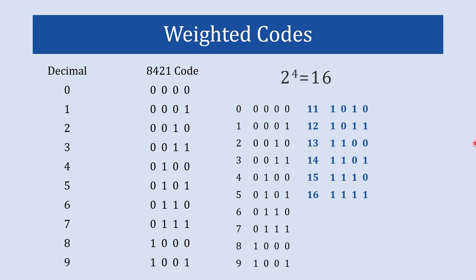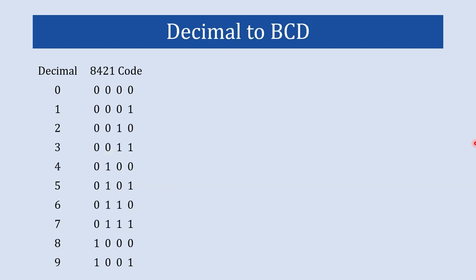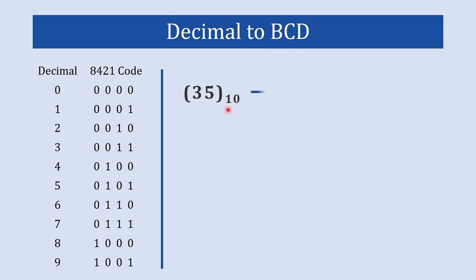So we have seen what is BCD code, where it is used, its types, and how they are constructed. Now we will see different conversions of BCD codes, and first of all we are going to start with decimal to BCD code conversion. Here we have decimal number 35, and now we will start converting this 35 into BCD code.